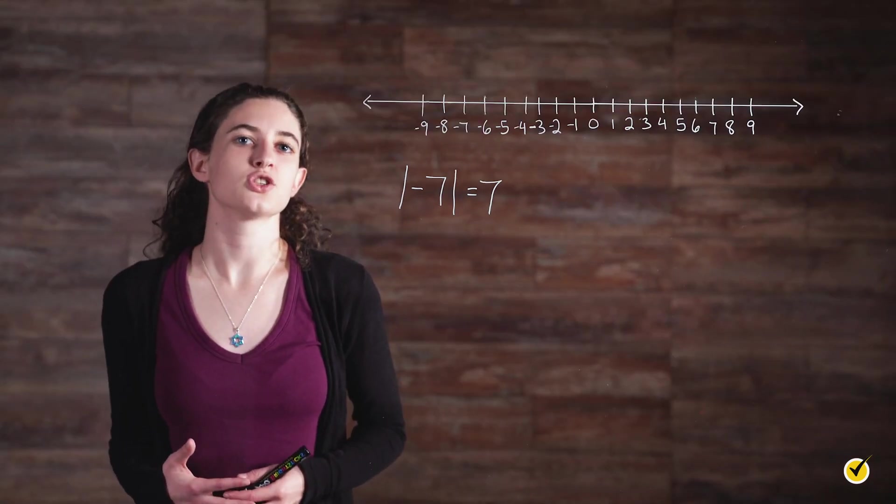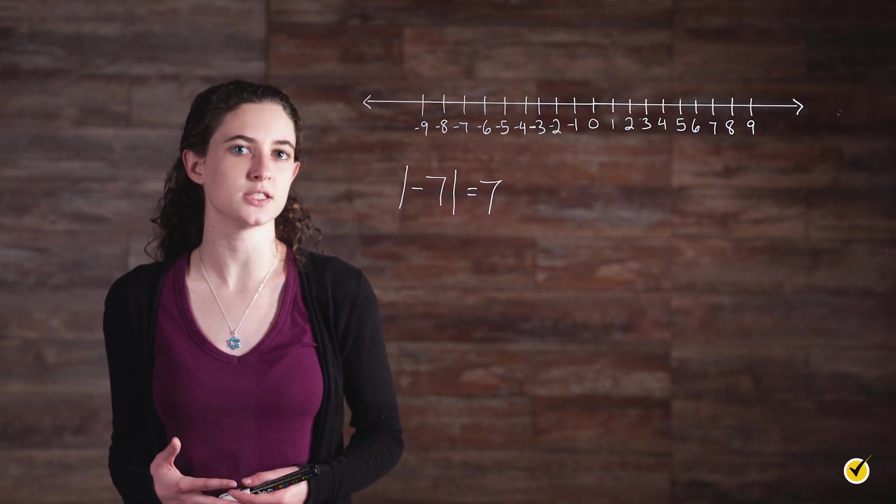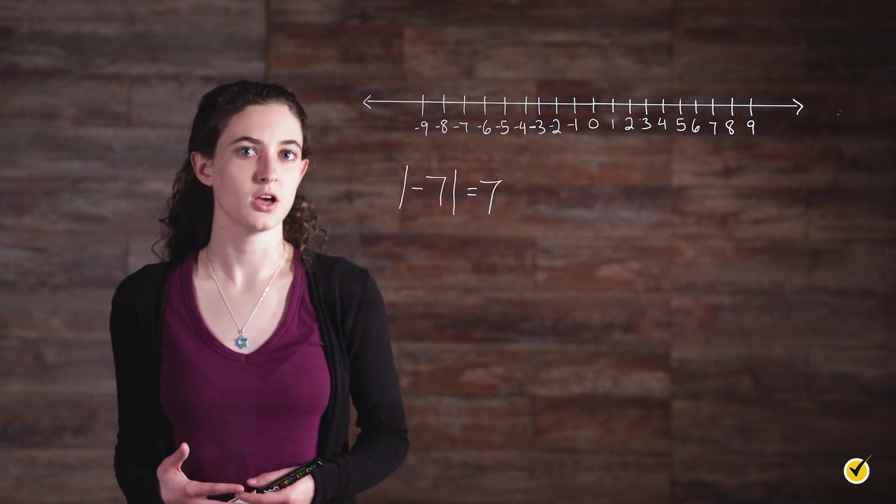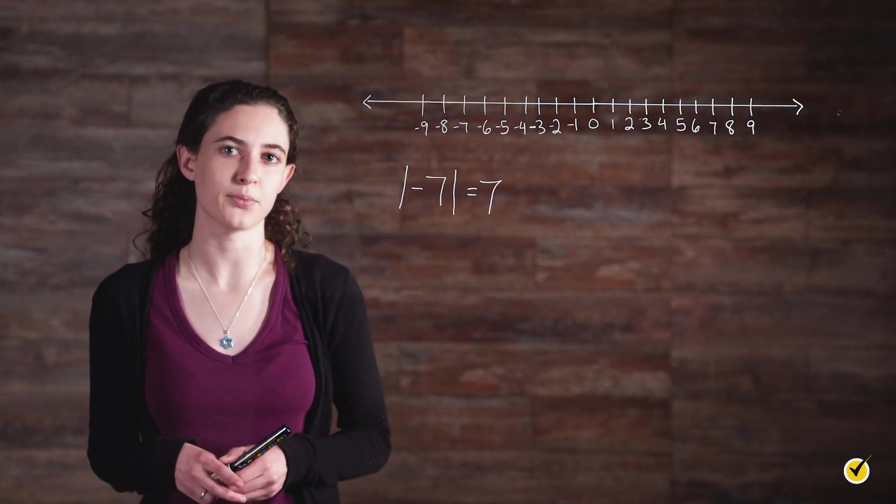When we evaluate expressions and solve equations, the absolute value brackets act very much like parentheses do in the order of operations. We evaluate what's inside the absolute value brackets first. Let's look at a simple example.